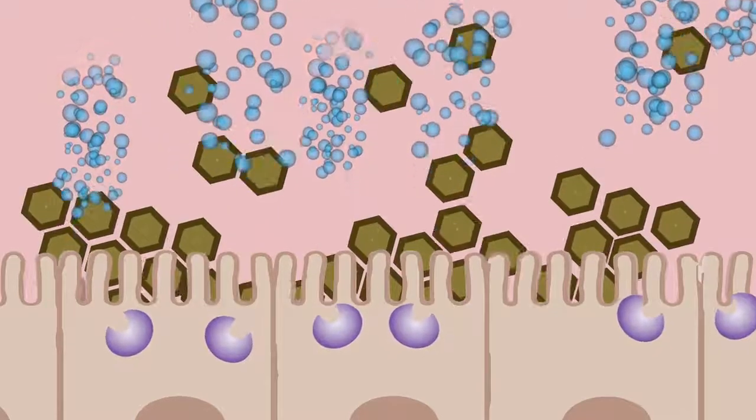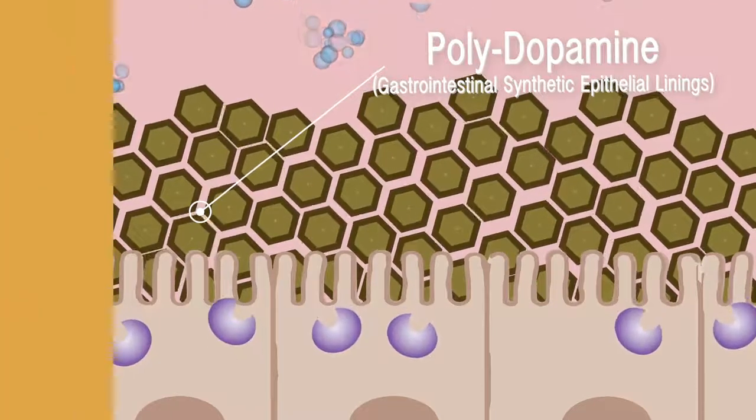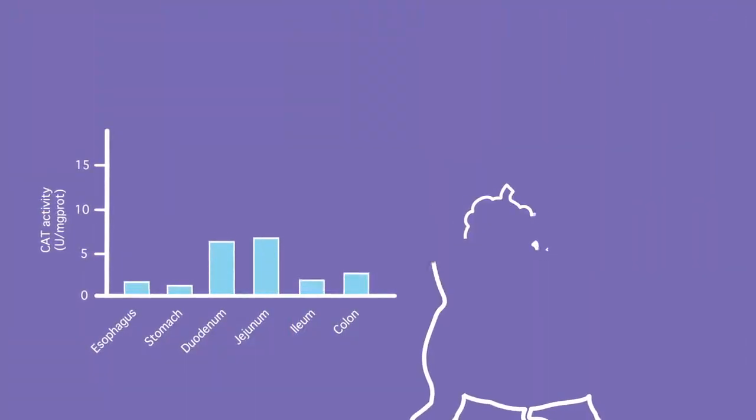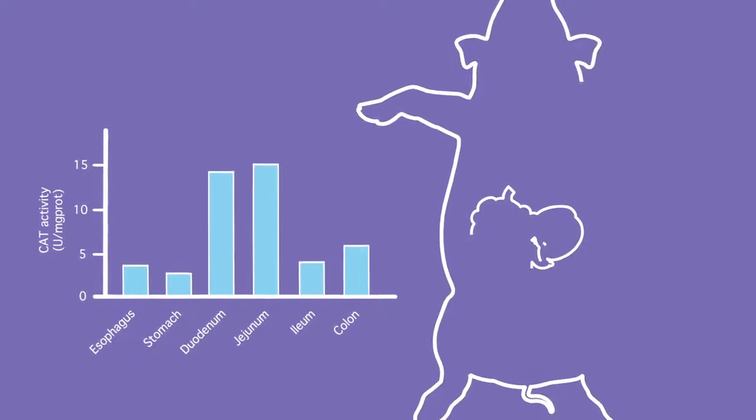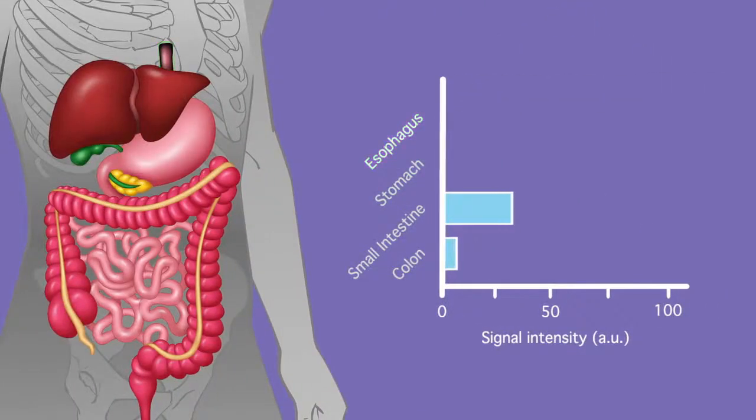We call these films gastrointestinal synthetic epithelial linings, or G-cell. We studied the presence of catalase in all segments of the GI tract of pigs, but also in human tissue, and found that higher concentrations of the enzyme were present in the first part of the small intestine.